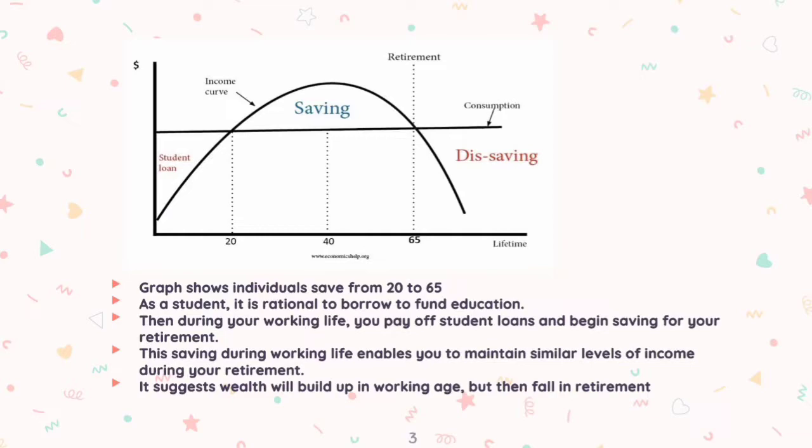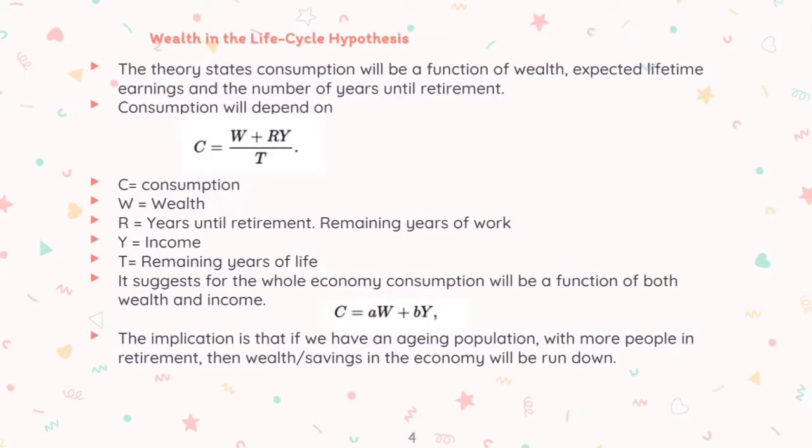It suggests that wealth will build up in the working age but then fall in retirement. In the life-cycle hypothesis, wealth will be a function of expected lifetime earnings and the number of years until retirement.